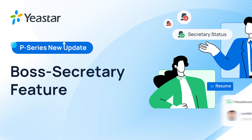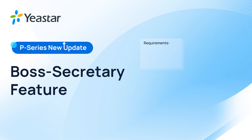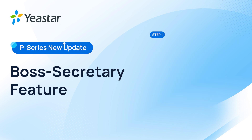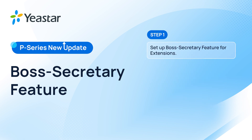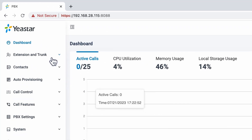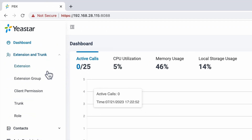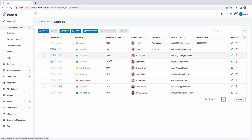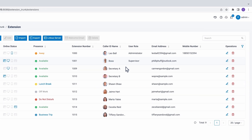First of all, we need to make sure our PBX has been upgraded to this version or later. Then we need to identify the Boss Extension and Secretary Extension. Go to the Admin Interface, Extension and Trunk. In the Extension list, we can find the Boss Extension.